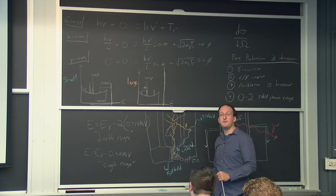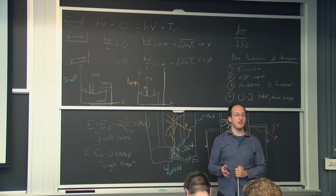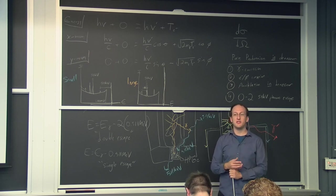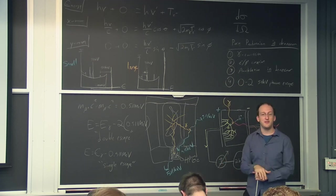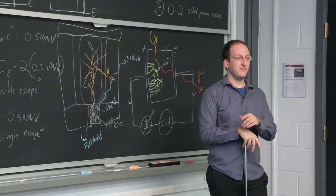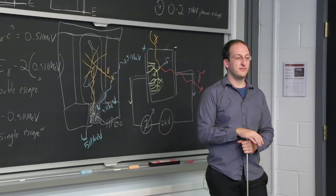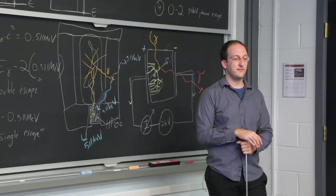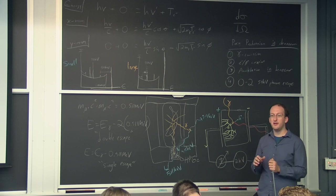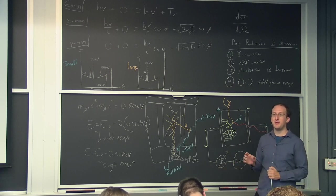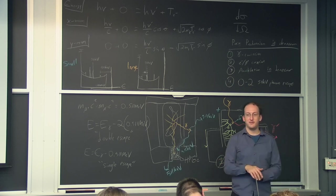Student question: you said 511 keV is the rest mass of the electron — so that's the energy you assume it has for pair production. That's right. The electron and the positron annihilate, turning their mass into energy. Since the rest mass of each is 0.511 MeV, the photons come off at 511 keV.